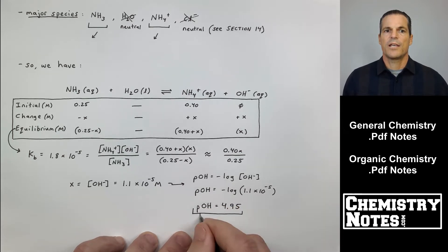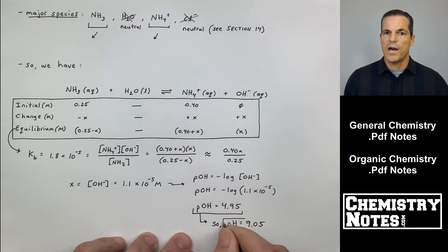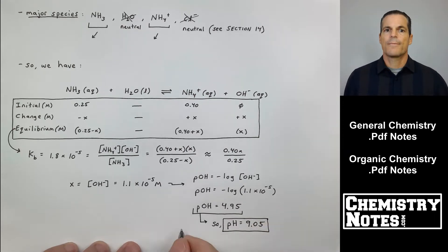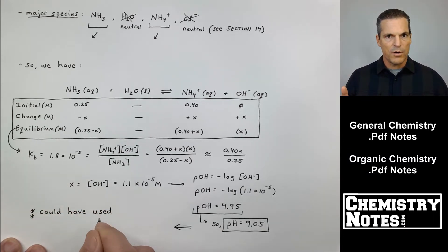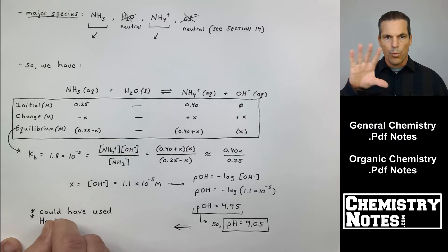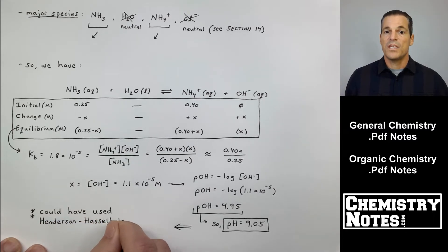Look at the equation. There's no H plus here. This is a base. x is equal to the concentration of OH minus. You go through the math. pOH is equal to 4.95. So be careful. That's the pOH you've solved for because this is a weak base situation. So pH then is 9.05.